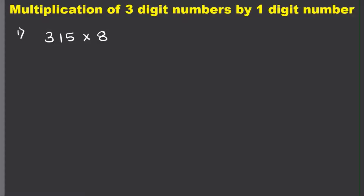However, when you line the problem up, it is best to write the number with the most digits on top and the fewest digits on the bottom. So line this problem up: 315 times 8. Make sure you line up all your places — 5 and 8 are lined up because they are in the ones place.